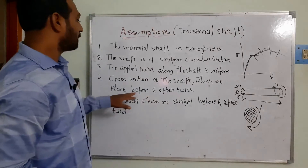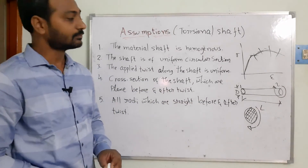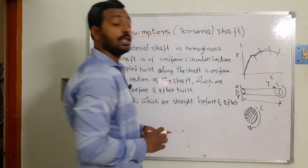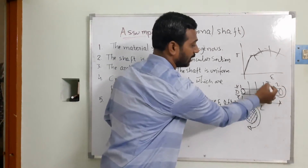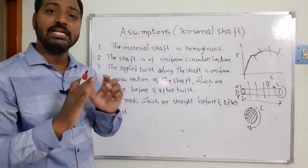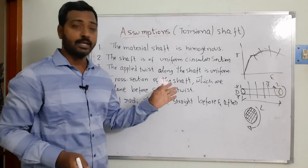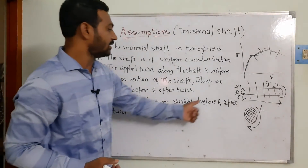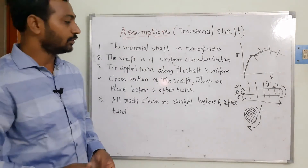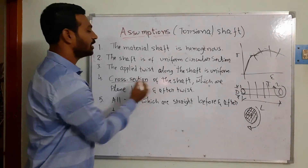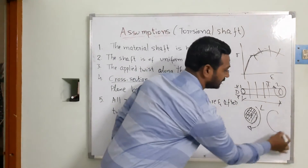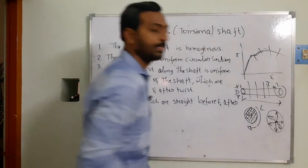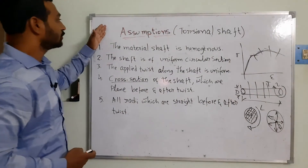The next assumption is that cross-sections of the shaft which are plain before twist remain plain after twist. The cross-section maintains its original circular shape before and after the twist is applied. Additionally, radii which are straight before twist remain straight after twist — meaning the radius considered before and after remains the same.